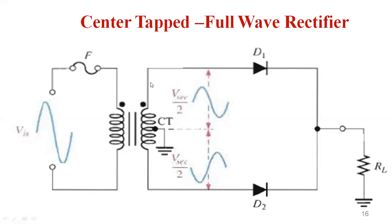Current flows from the transformer through diode D1, then through the load resistor, and then to ground. So for the positive half cycle, D1 is on and current flows through it, appearing across the load. During the negative half cycle at the input of the transformer, there is a reversal of voltage, and the same reversal happens at the secondary of the transformer.